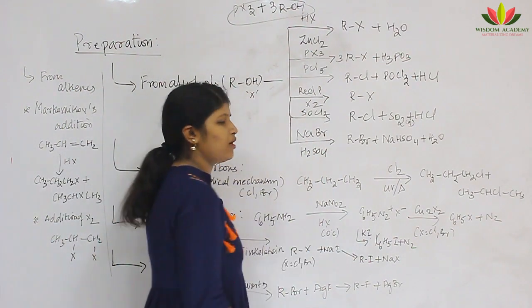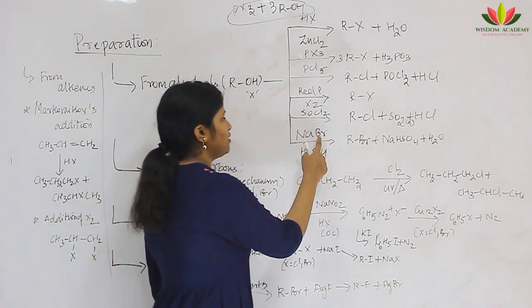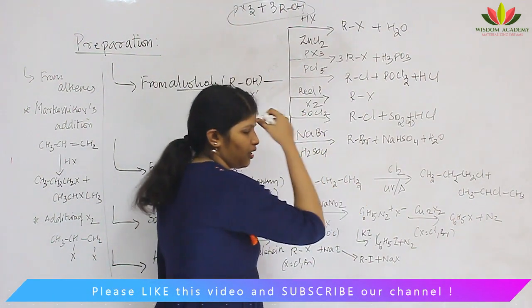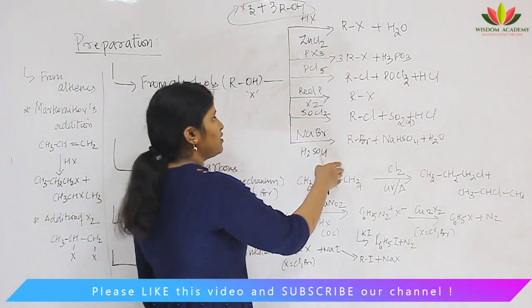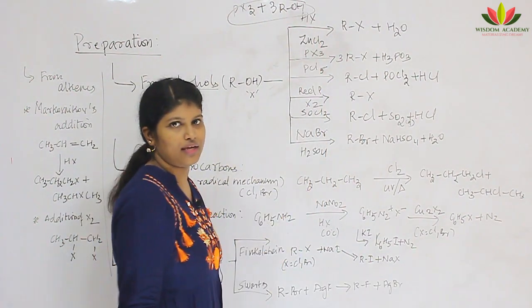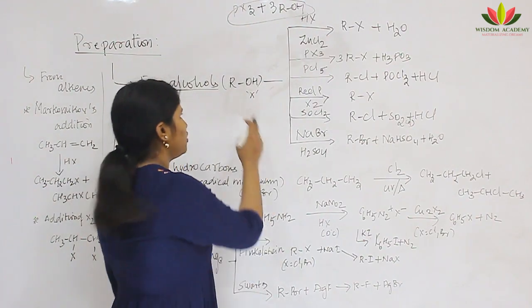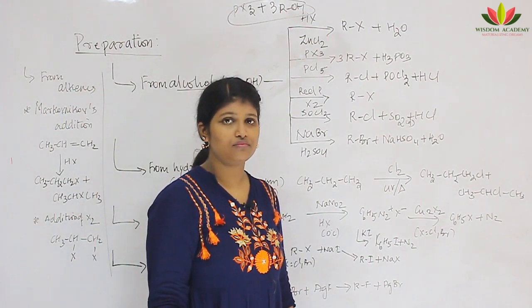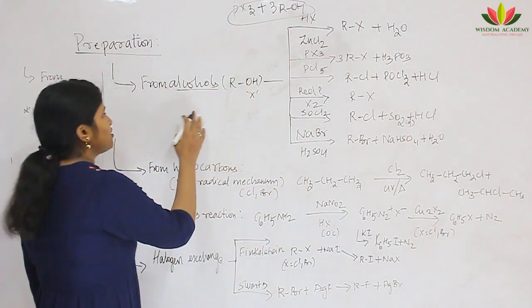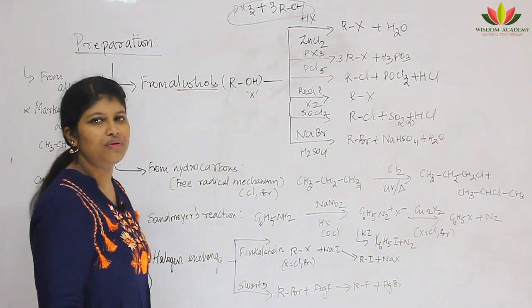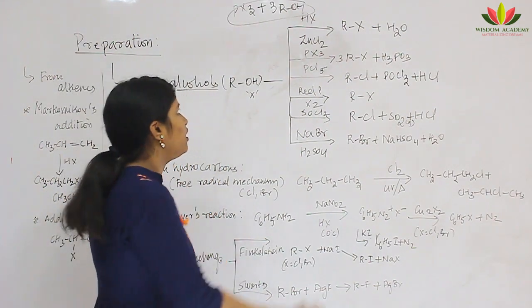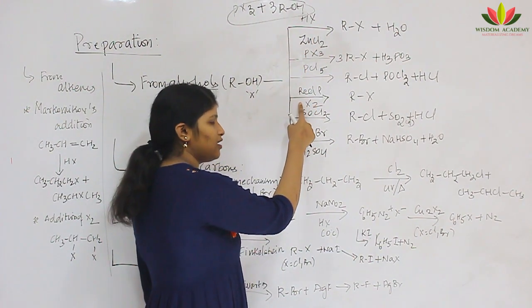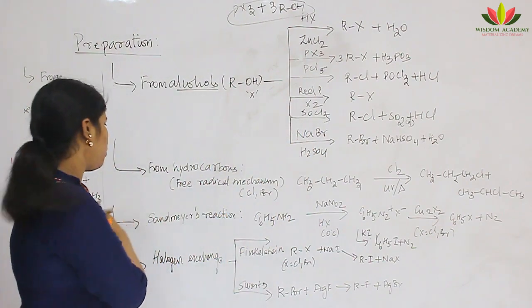The last method from alcohols is with sodium bromide in the presence of sulphuric acid — bromine will go to the R group and sodium bisulphate and water are produced. In all these reactions they are called halogenating reagents because they donate a halogen to the R group, replacing the OH group with a halogen atom. The reagents are: HX, phosphorus trichloride, phosphorus pentachloride, halogen with red phosphorus, sulfonyl chloride, and sodium bromide.